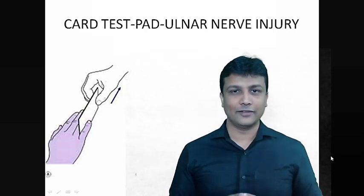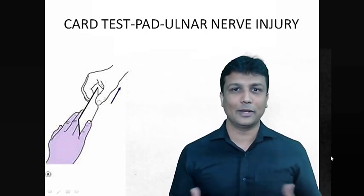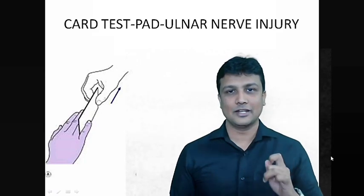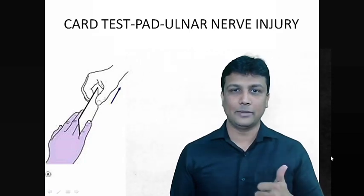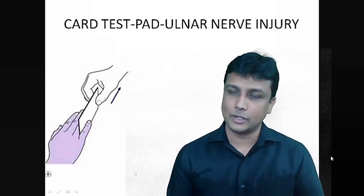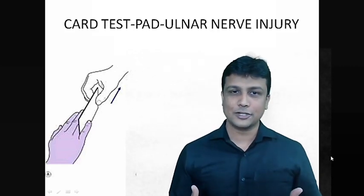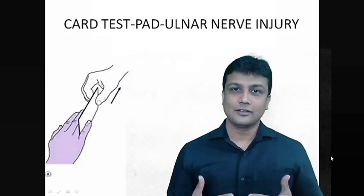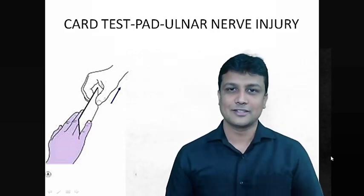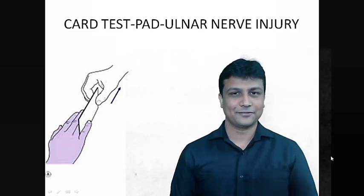So if this question comes in the exam, in the CARD test the muscle involved is the palmar interossei and the nerve involved is the ulnar nerve. Hope this helps in your preparation — thank you, like, share, and subscribe to my channel. Stay blessed, stay safe.